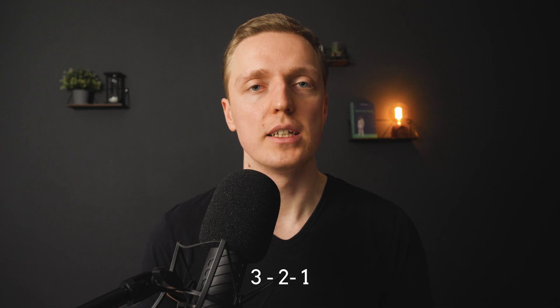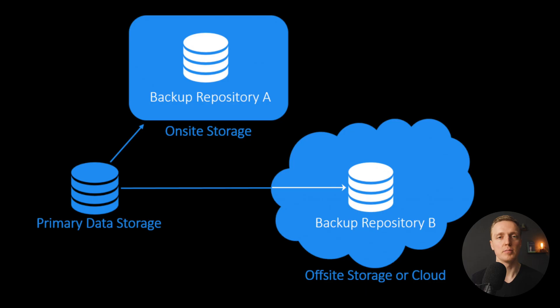Now let's talk about backing up your data. The simple rule of backups is 3-2-1: you need 3 copies of your data — 1 working copy and 2 backup copies. Normally, 2 copies can be in the same location, for example in your flat, but on different drives. And you need 1 more copy offsite somewhere outside your home, so that if some disaster happens and you lose everything at home, you still have a way to restore your files.